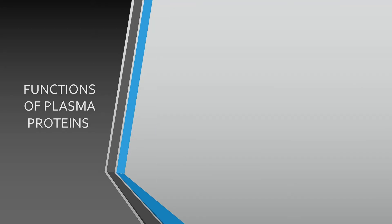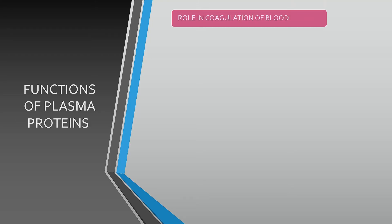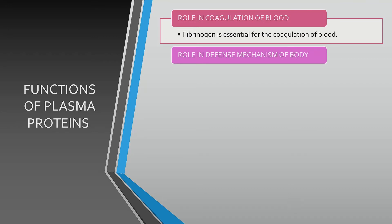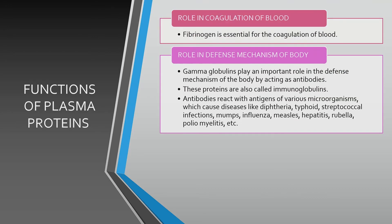Let's see what are the functions of plasma proteins. Plasma proteins have a role in coagulation of blood, as especially fibrinogen is essential for the coagulation of blood. Regarding the role in defense mechanism of the body, the gamma globulins play an important role in the defense mechanism of the body by acting as antibodies. Antibodies react with antigens of various microorganisms which cause diseases.